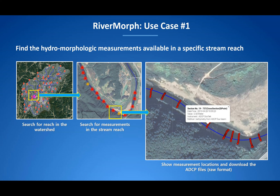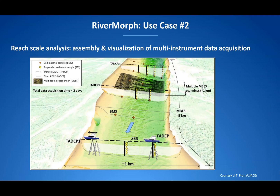We also plan to demonstrate the applicability of RiverMorph through some use cases. Here is a simple use case: a user searches for data, clicks on a stream network, finds a reach, and the interface shows a detailed view of the data available for that reach. In this case, ADCP measurements are displayed for a selected reach. One could assemble all the information available and create a 3D visualization of river morphology data collected by multiple instruments including the ADCP, multi-beam echo sounder, and single beam echo sounder for detailed analysis.